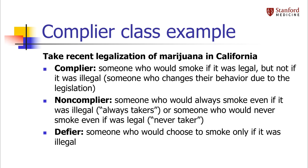Maybe if you had teenagers who were smoking just to be rebellious or something. I also want to point out that we could have partial compliers — for example, someone who smoked before but is now going to smoke more now that the drug is legal. That would be a partial complier. In my derivations, I'm going to treat complier class as binary just to keep things simple, but in reality complier class is more of a continuum.